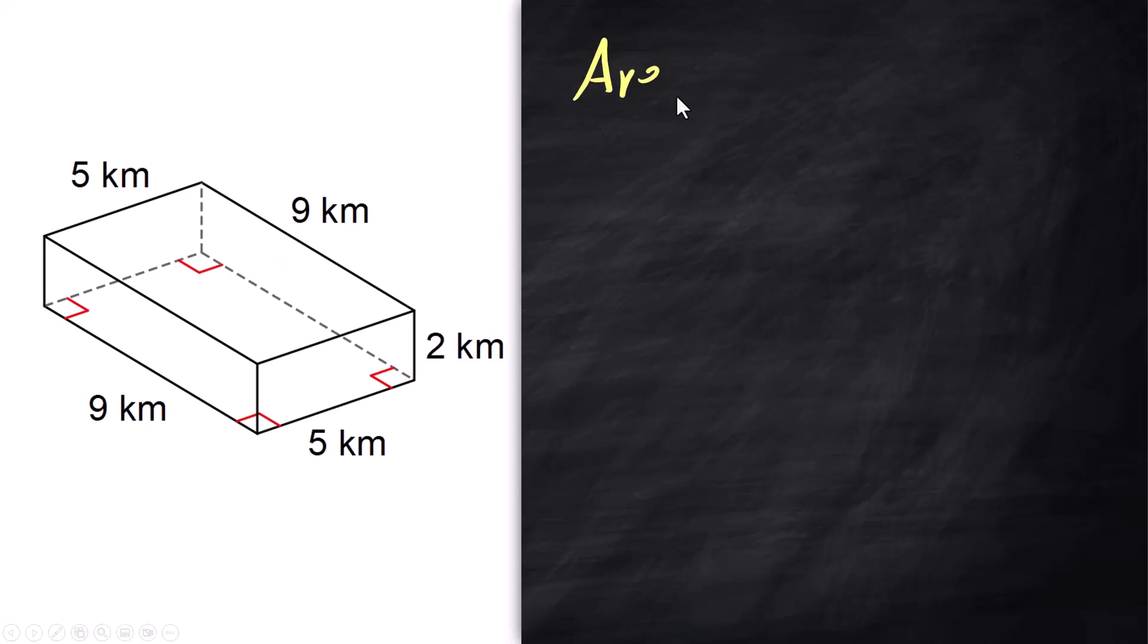The first thing you do when you want to find the volume is you have to find the area of the base. Now you can choose any of these sides. For this guy or for a box you can choose any side to be the base. I'm choosing this one. So the area of a rectangle is length times width so it's going to be 5 times 2 which is 10 so that is 10 kilometers squared. I'll put the units on at the end.